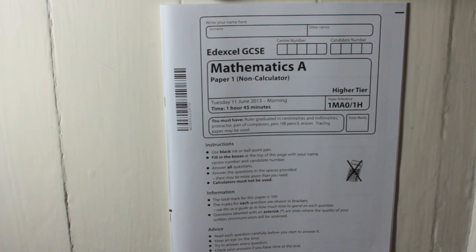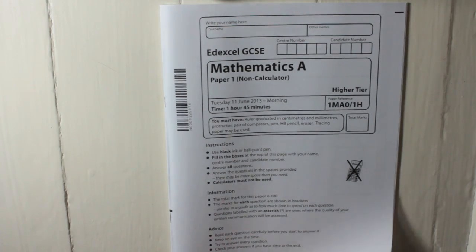This is the Edexcel GCSE paper, Mathematics A, paper 1, non-calculator, from the 11th of June 2013. You have 1 hour and 45 minutes to do this.